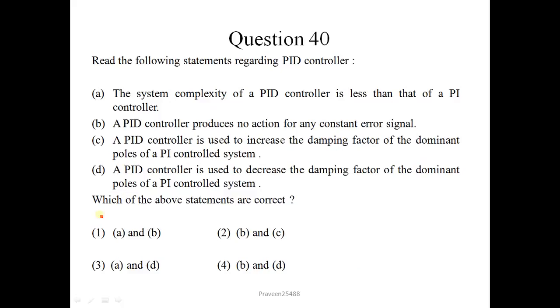Question 40: If the following statements are regarding PID controller. The system complexity of PID controller is less than that of PI controller - this statement is not correct. A PID controller produces no action for any constant error signal - this statement is correct. A PID controller is used to increase the damping factor of the dominant poles of a PI controlled system. This is also correct. PID controller is used to decrease the damping factor of the dominant poles of PI controlled system - this is incorrect. B and C are correct, so correct option is 2.